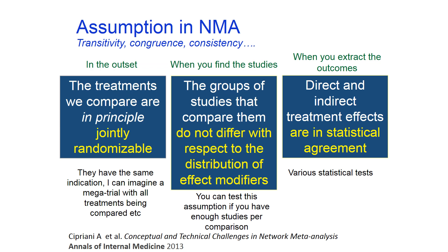Consistency is the statistical manifestation of transitivity in the dataset and occurs when direct and various sources of indirect evidence are in agreement. Consequently, consistency can be evaluated only in closed loops of evidence. The distinction between transitivity and consistency is analogous to the distinction between clinical or methodological homogeneity and statistical homogeneity in standard pairwise meta-analysis. There are several statistical methods to evaluate whether a network is consistent and detect hot spots of inconsistency. However, all methods are characterized by low power and their performance depends on the amount of residual within-comparison heterogeneity.